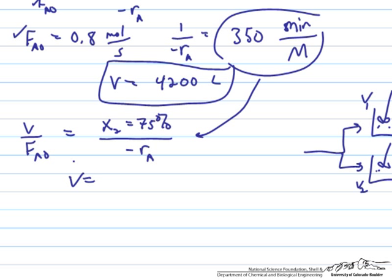If we want to do this for an individual reactor, then we'll want to multiply by one half if we split the flow in half. An individual reactor will be 6300 liters, if I solve that right, but the two reactors together would have a total volume of 12,600, so double that.